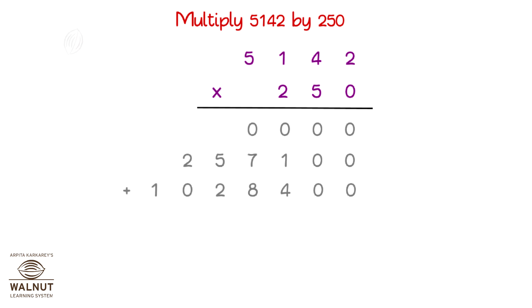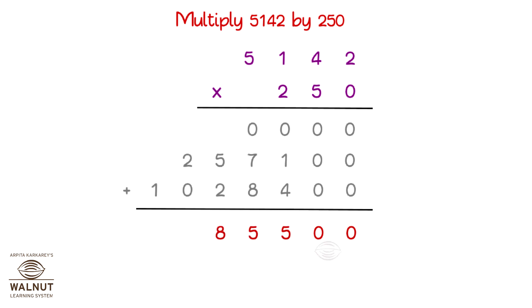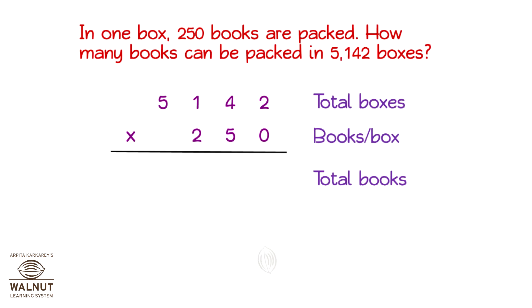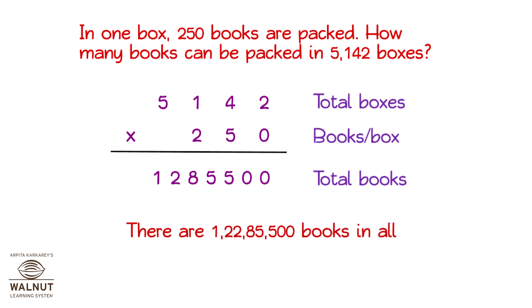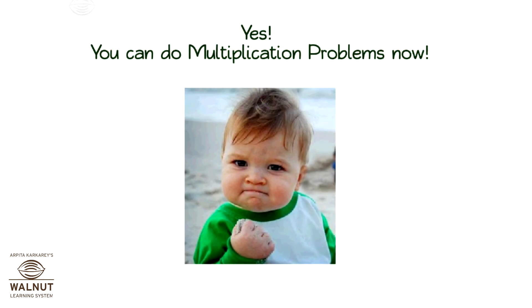Now let's add up all these numbers. We make sure we are neat in our work. And there we have our product. Let's take our product back to the problem we are solving. We have the number of books. There are 1 crore 22,85,500 books in all. You can do multiplication problems now.